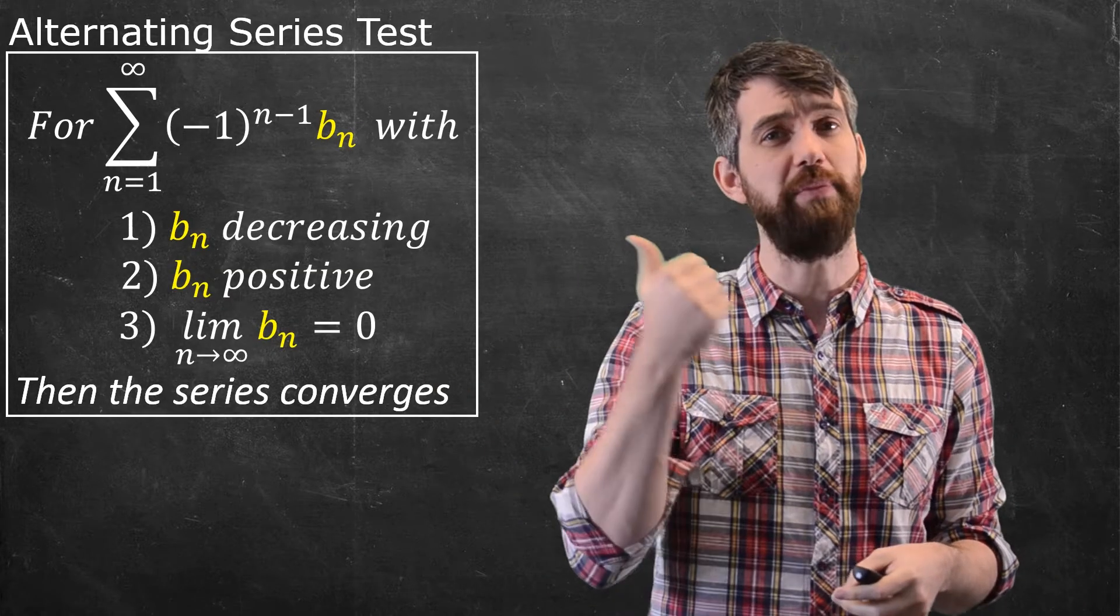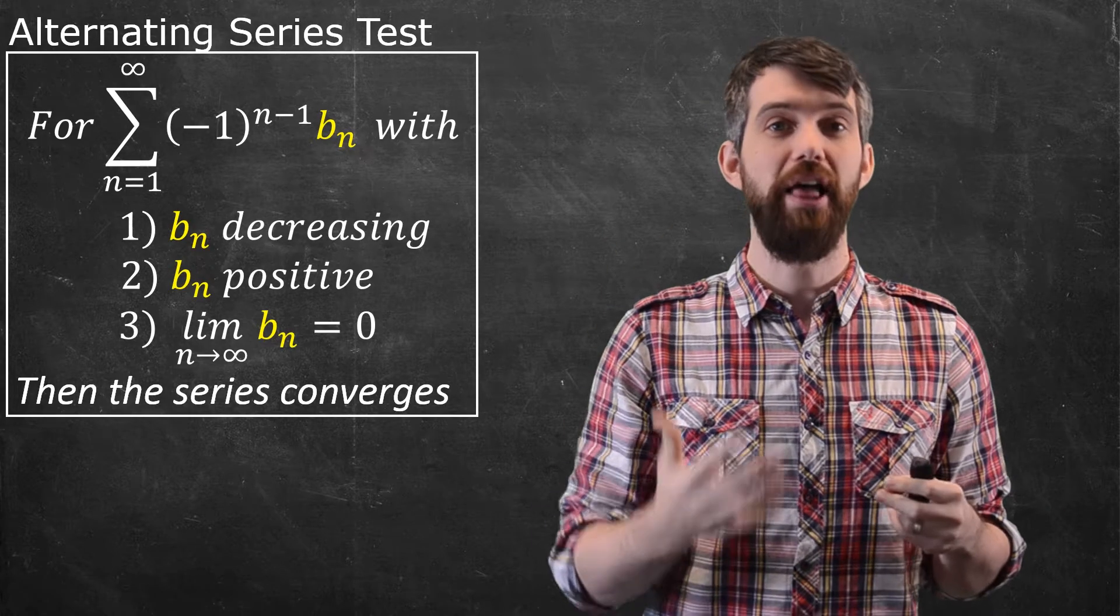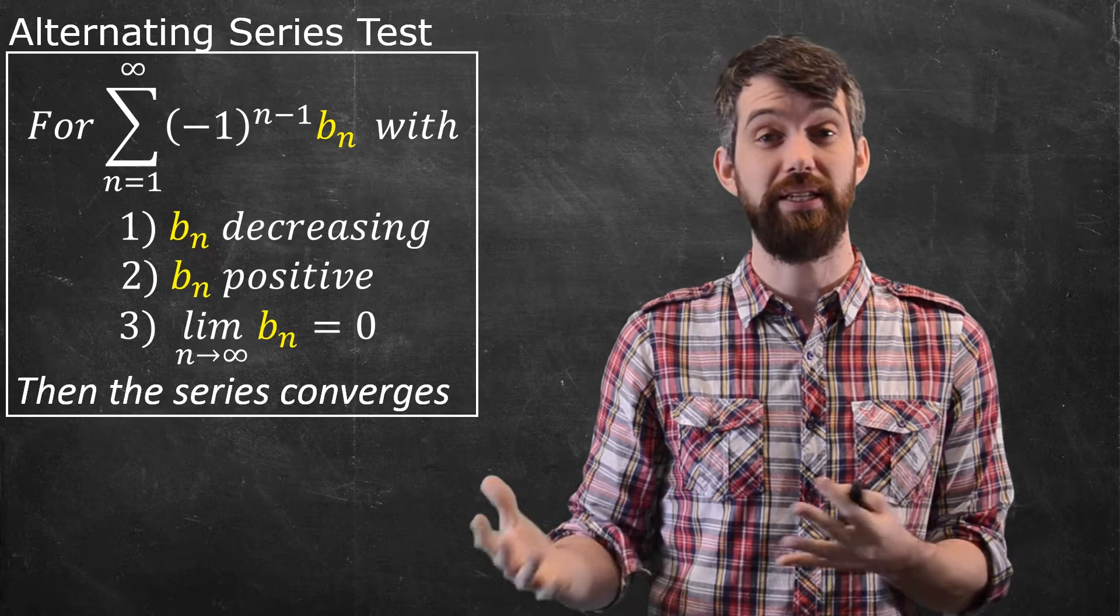with b_n decreasing, b_n positive, and lim b_n = 0, if all three conditions are true, then we conclude that the series converges. That is our alternating series test.